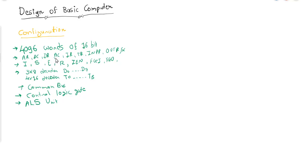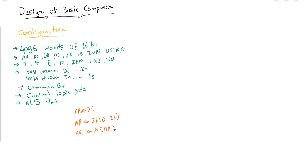Let us focus on one register — the address register (AR). The sample transactions involving AR are: PC→AR, IR[0-11]→AR, M[AR]→AR, 0→AR (initialize to zero), and AR = AR + 1.